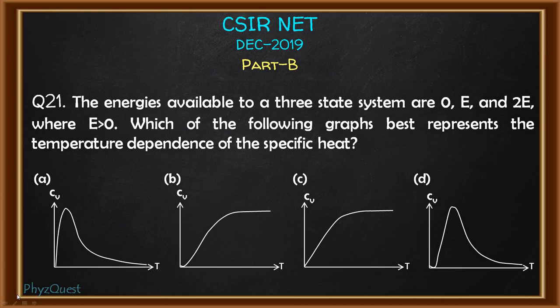Hello, welcome to FizzQuest. This is the solution video for CSIR NET December 2019 Part B, question number 21. The question states: the energies available to a three-state system are 0, E, and 2E where E is greater than 0. Which of the following graphs best represents the temperature dependence of the specific heat? Four plots are given and we need to choose the correct plot.